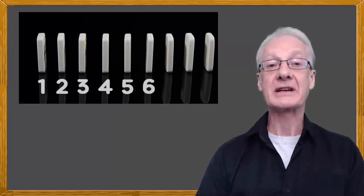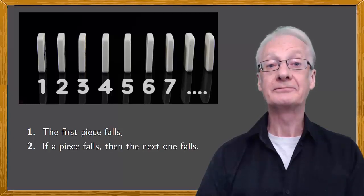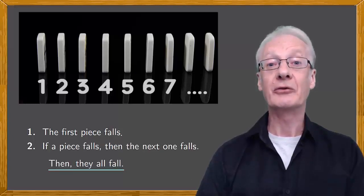Now we'll number the tiles from the beginning: one, two, three, four, five, six, seven, and so on. From the experiment we know one, that the first piece falls, and two, that if a piece falls, then the next one also falls. Therefore, they all fall.